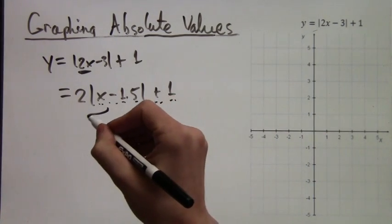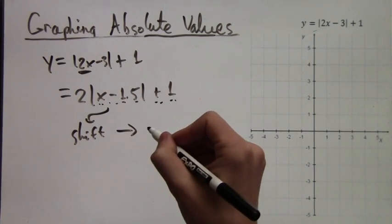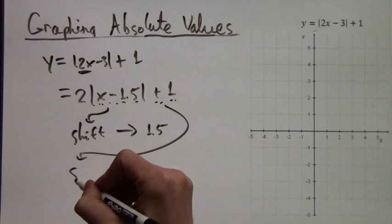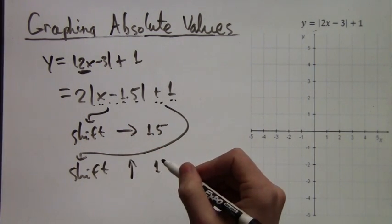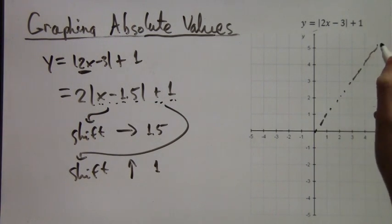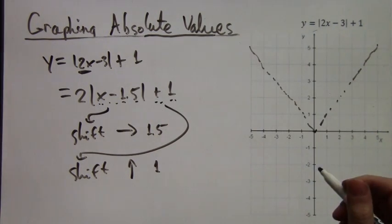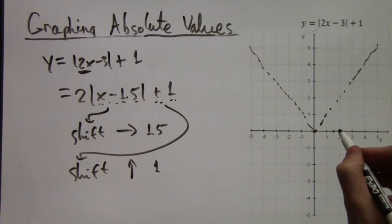All right, so the minus 1.5 means a shift to the right by 1.5. And plus 1 means a shift upwards by 1. So let's graph that. First, we have y equals |x|. It's always good to have that basic graph in mind, and then you can shift it pretty easily. So we take that corner, and there it is.